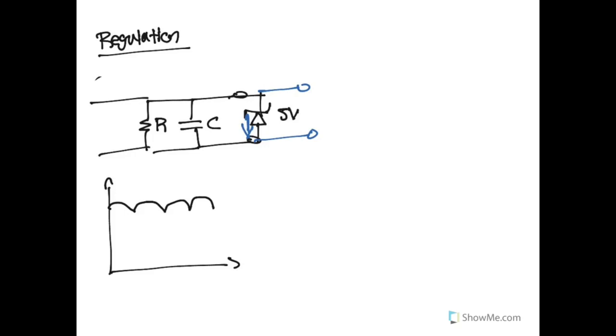So in our final stage here, we will have a Zener diode that takes our filtered circuit and actually completely regulates it down to its particular level.